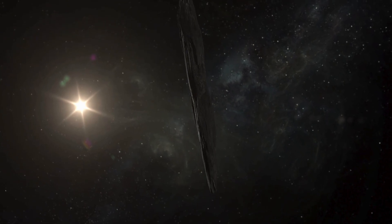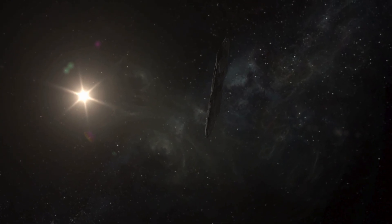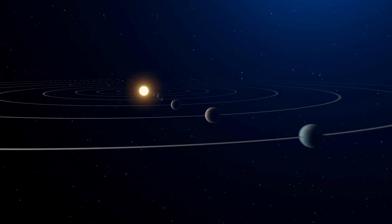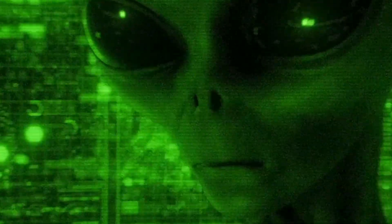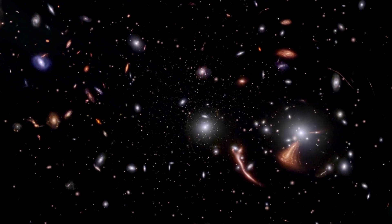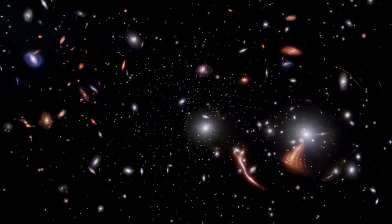Each interstellar visitor, Oumuamua, Borisov, now 3I-Atlas, teaches us that not all star systems are like ours. What we call normal might be alien elsewhere. And 3I-Atlas' quirks, from its CO2 coma to its metallic mysteries, prove it.